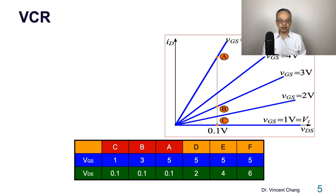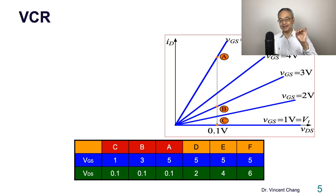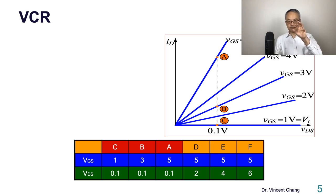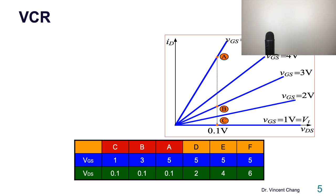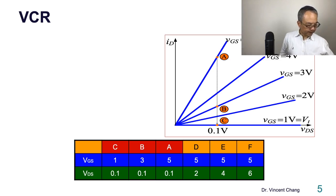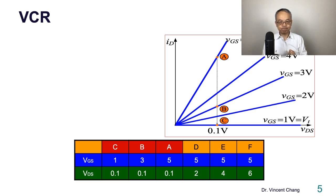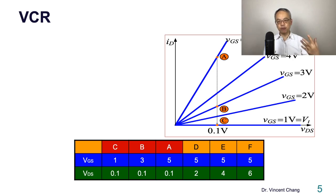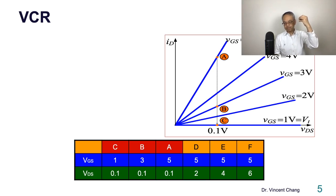The third concept is the concept of voltage-controlled resistance. Based on the six-point analysis, the behavior of the MOSFET around the origin resembles a resistor whose value can be controlled by the third terminal, VGS — the voltage-controlled resistance.